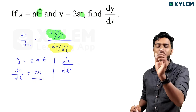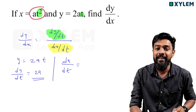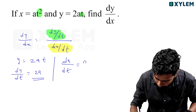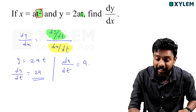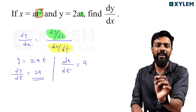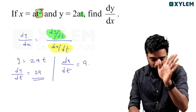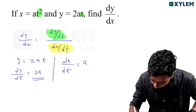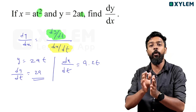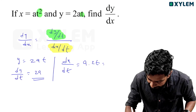For dx by dt, where x equals at squared: that means a into the derivative of t squared with respect to t. The derivative of t squared is 2t, so dx by dt equals 2at.